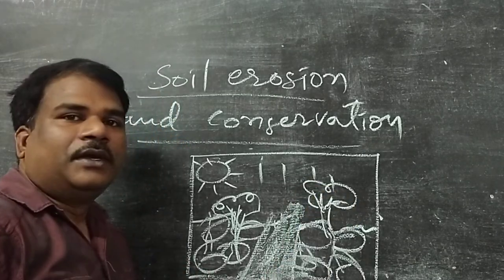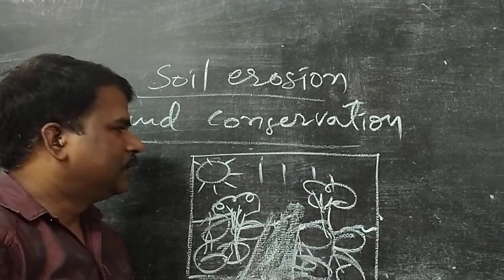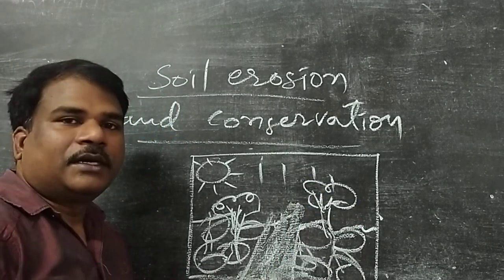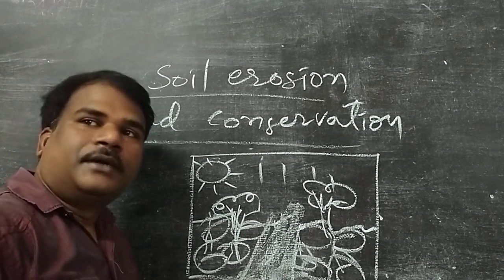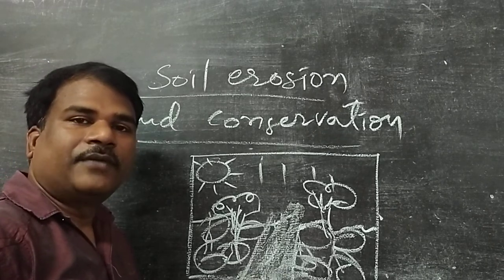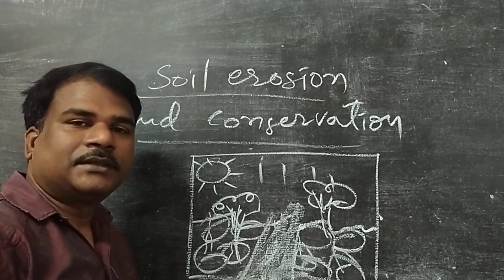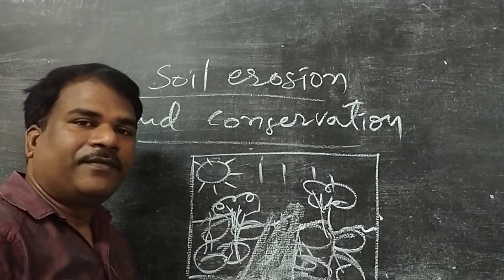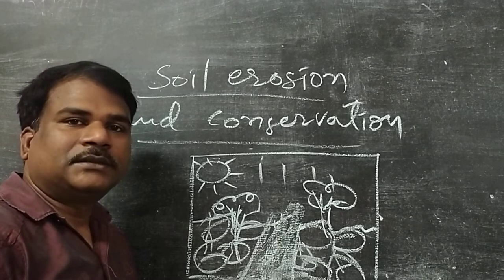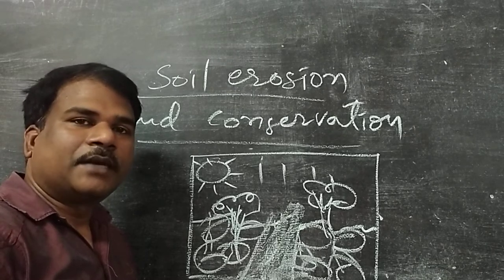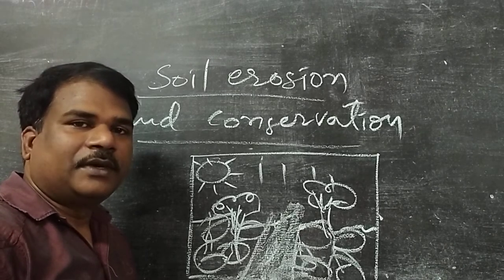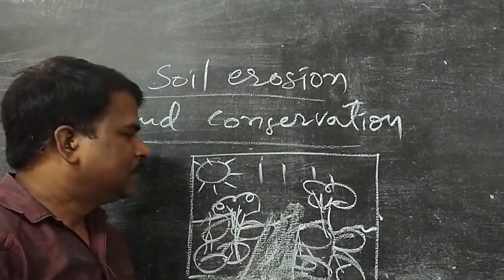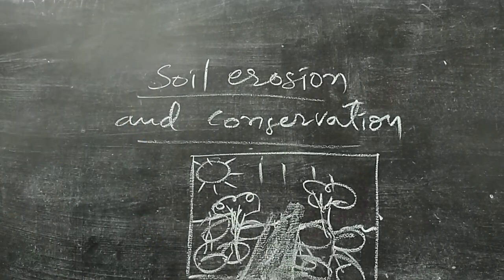We have to learn about deforestation, afforestation, reforestation, cover crops, and shelter belts. These are the different topics we have to learn in this lesson.